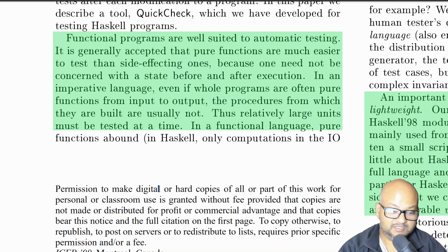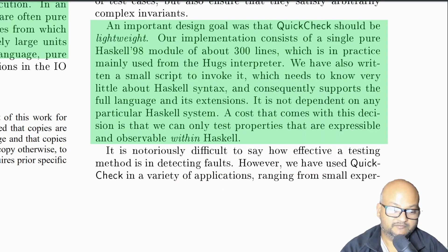On the other hand, with typical imperative programs that manage a lot of global state, you really need to test large units and have some sort of large integration tests to get that same level of confidence. The framework that the authors have built is called QuickCheck and one of its key design goals was to be lightweight. The authors mentioned that the entire implementation is only about 300 lines of Haskell.